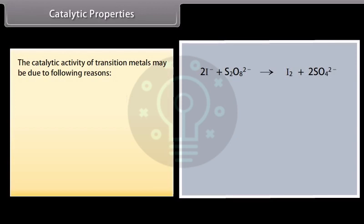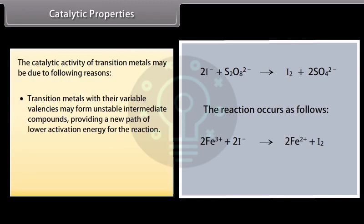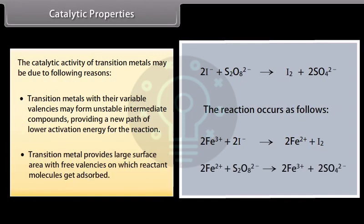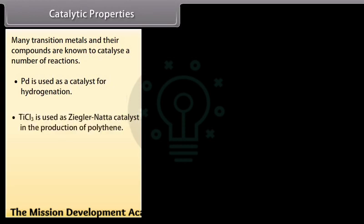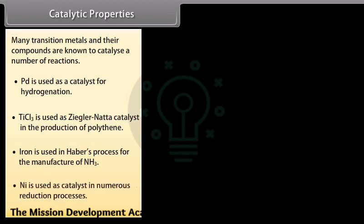The catalytic activity of transition metals may be due to following reasons: Transition metals with variable valences may form unstable intermediate compounds, providing a new path of lower activation energy. For example, iron catalyzes the reaction between iodide and persulfate ions. Transition metals provide large surface area with free valences on which reactant molecules get adsorbed, increasing reactant concentration and weakening bonds. Examples: palladium is used as a catalyst for hydrogenation, titanium trichloride is used as Ziegler-Natta catalyst in production of polythene, iron is used in Haber's process for ammonia, and nickel is used in numerous reduction processes.